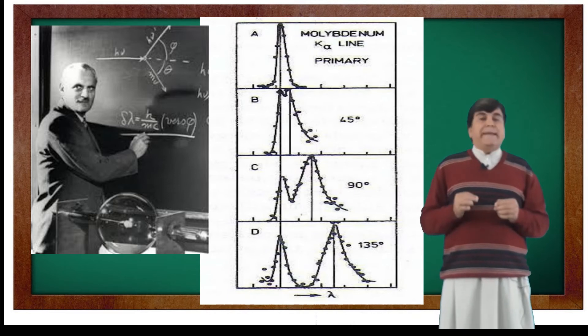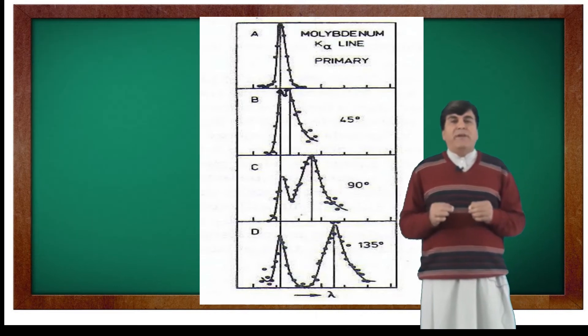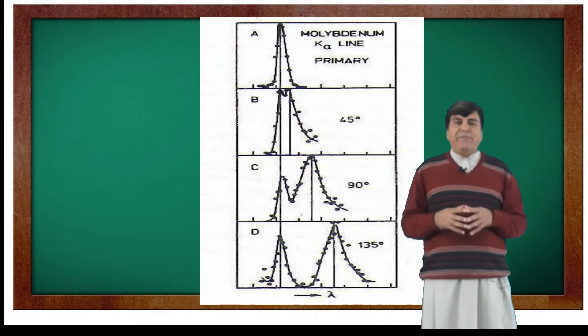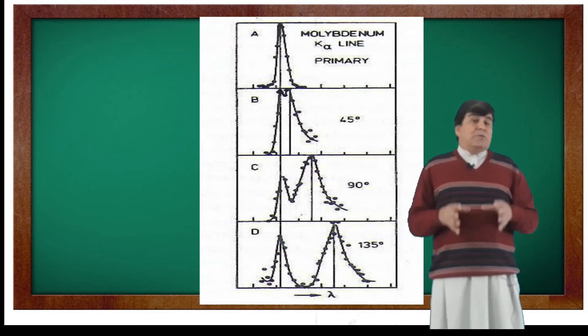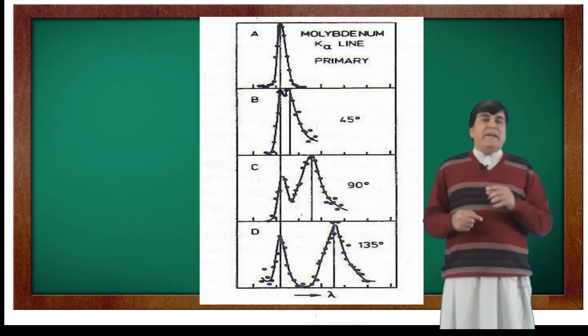At larger angles, the additional peaks become more prominent in intensity and get shifted to the region of longer wavelengths. So this is what Compton observed in his experiment.